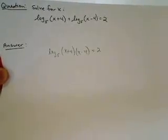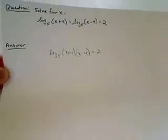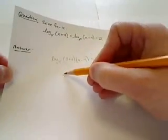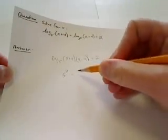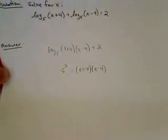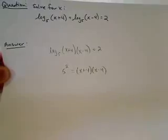Now I can use the definition of what a logarithm is and take 5, the base, raised to what it's equal to and set it equal to x plus 4 times x minus 4. That's by the definition of logarithms.